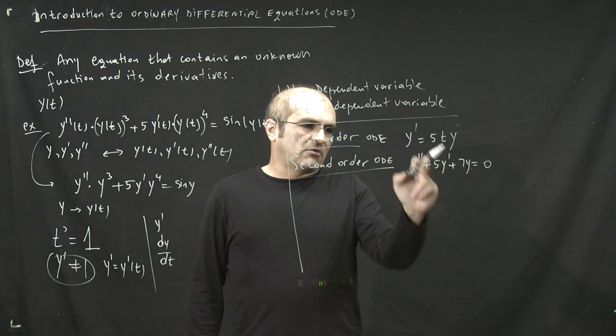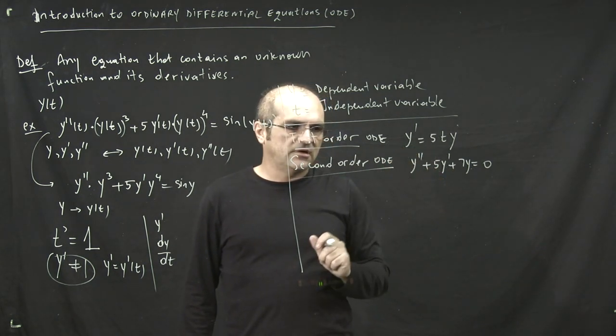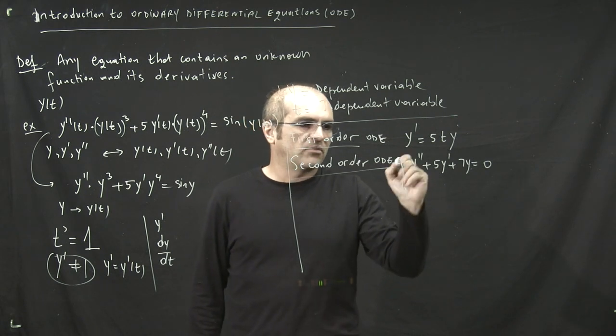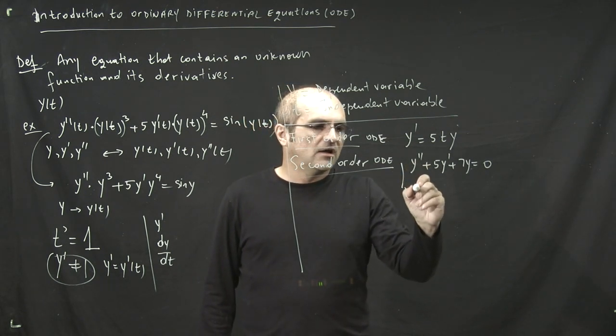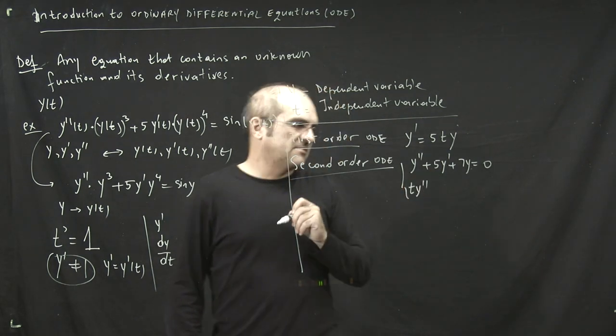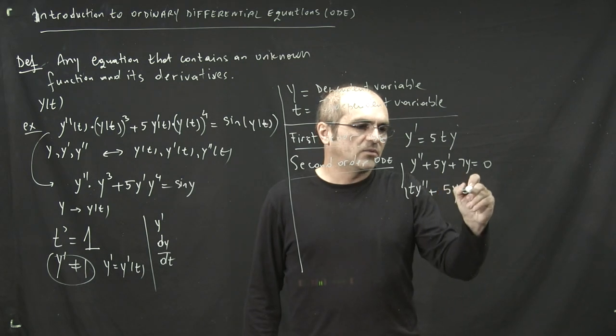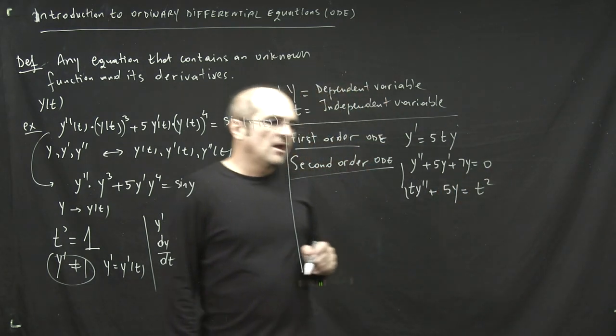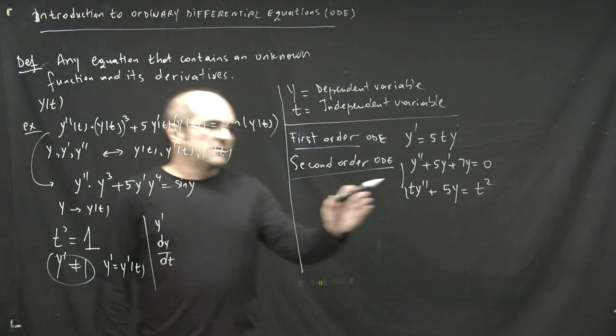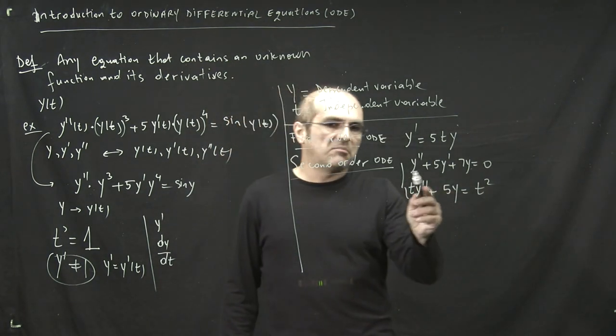Y prime doesn't have to be there, but for second order, y double prime needs to be in the equation. So here's another example of a second order: y double prime times t - you can have some coefficients like that - plus 5y equals t squared. So you could have extra terms that depend on t, or not, like in this example.